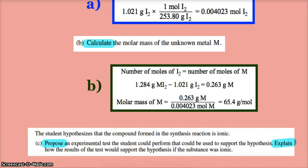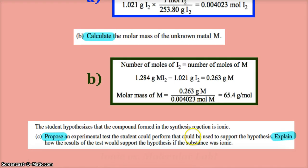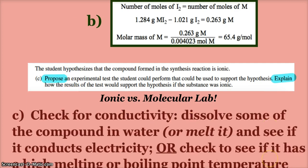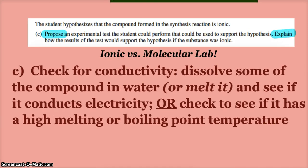All right, now the student hypothesizes that the compound formed is ionic. Propose an experimental test that we could perform to support the hypothesis. Explain how the results would support the hypothesis. This should hopefully conjure up some images of our ionic versus molecular lab.